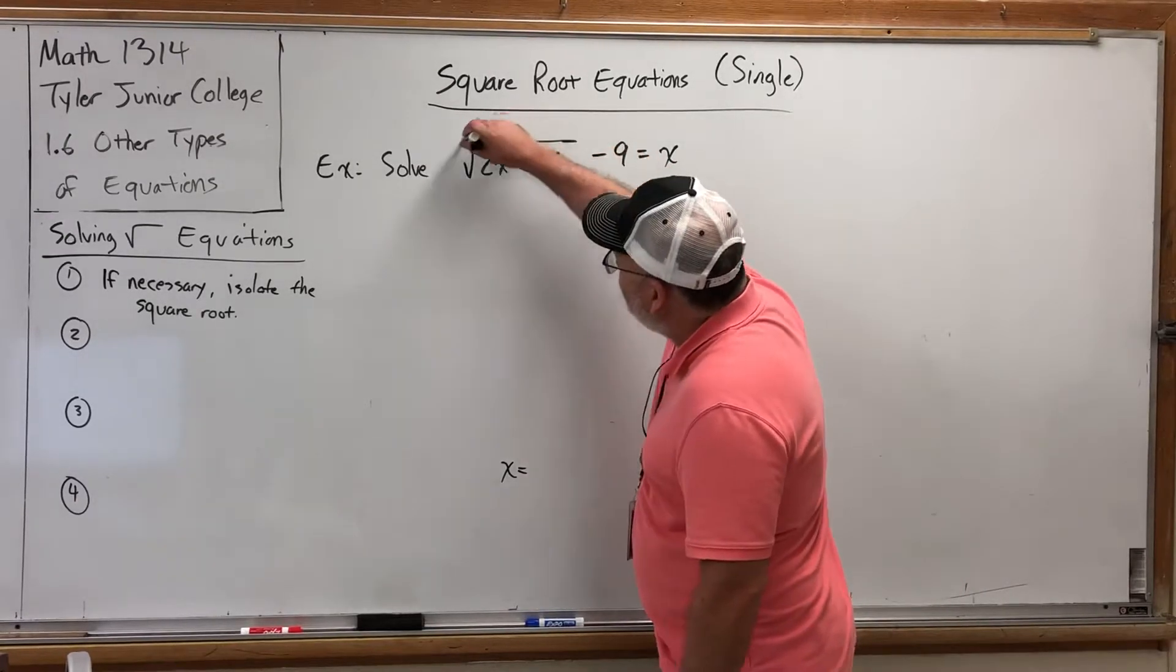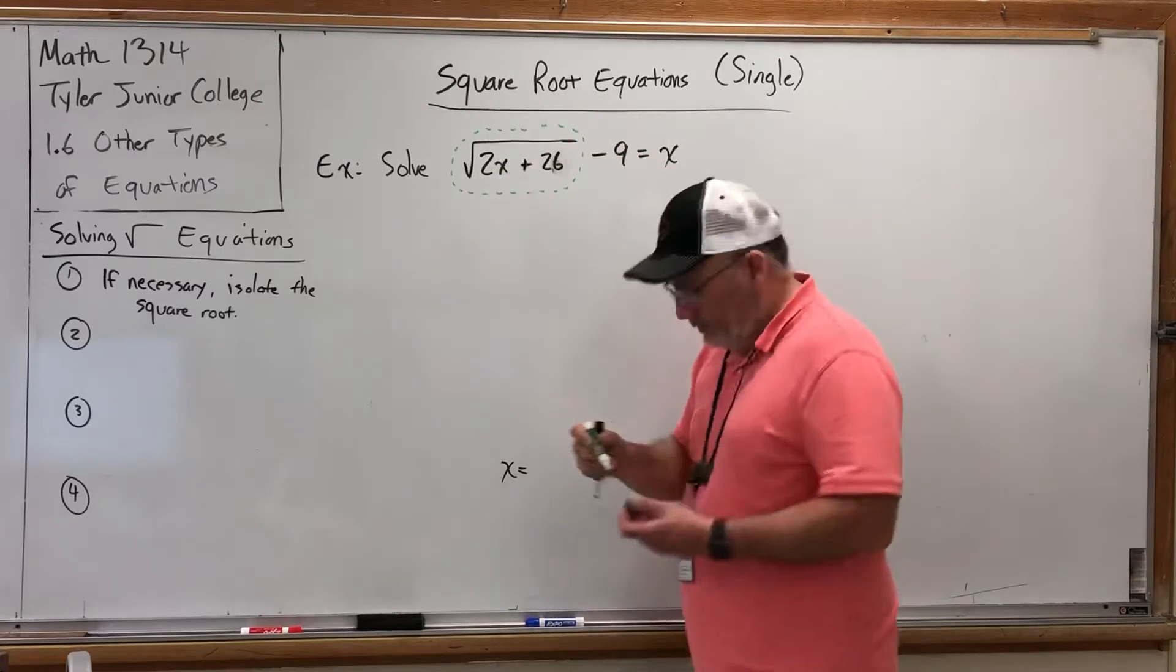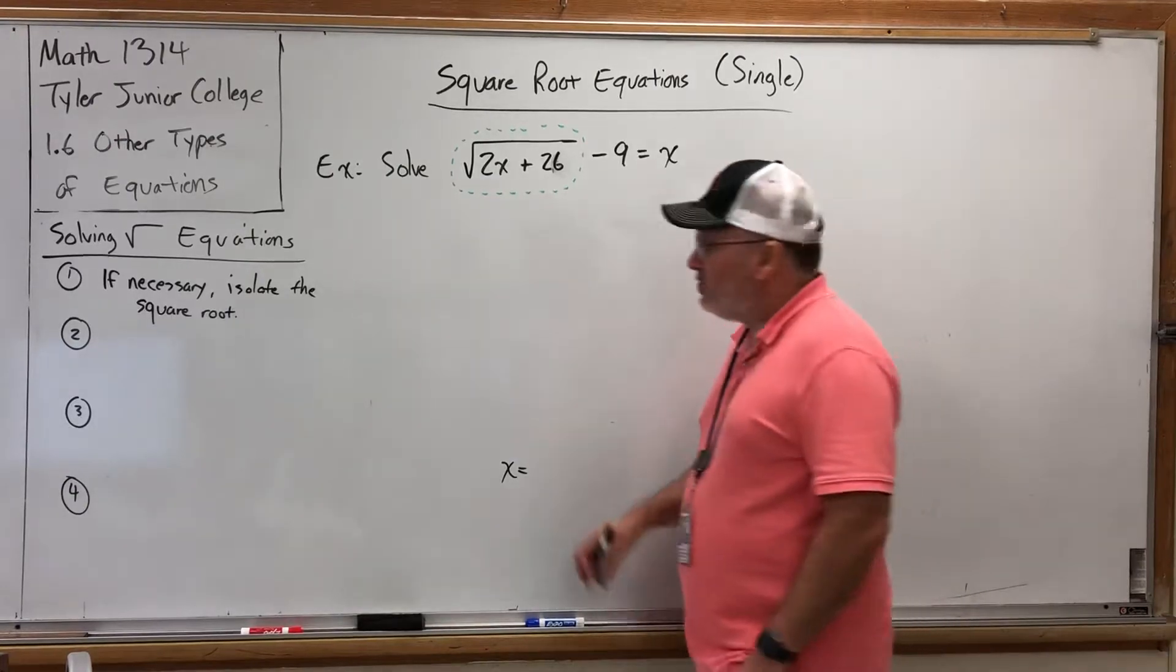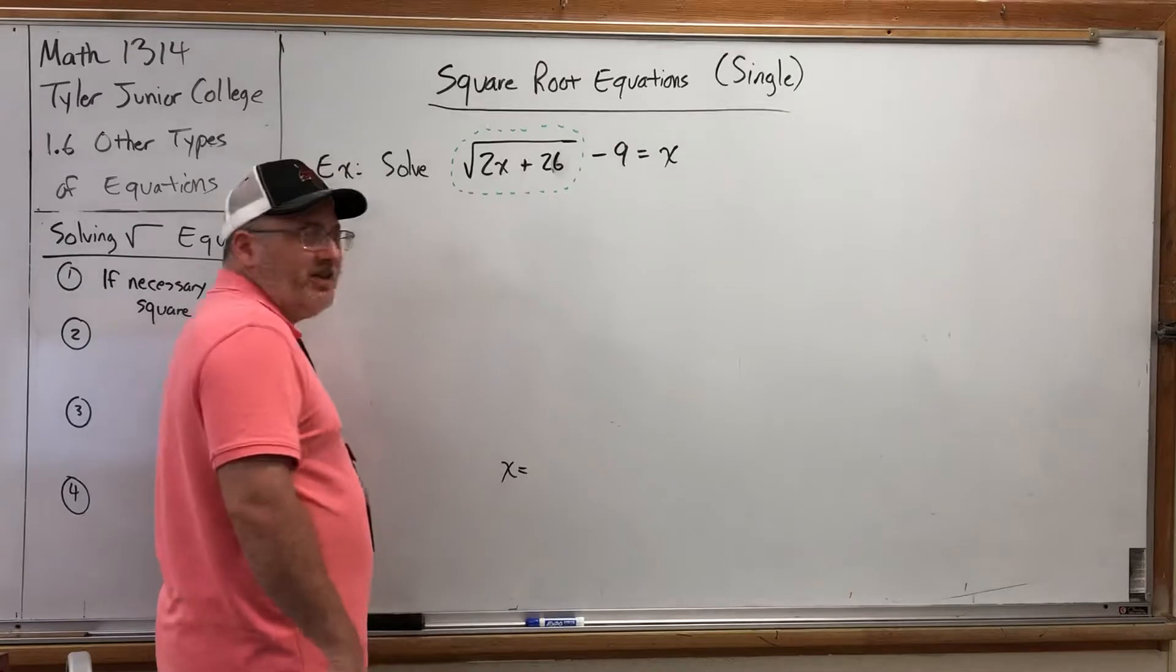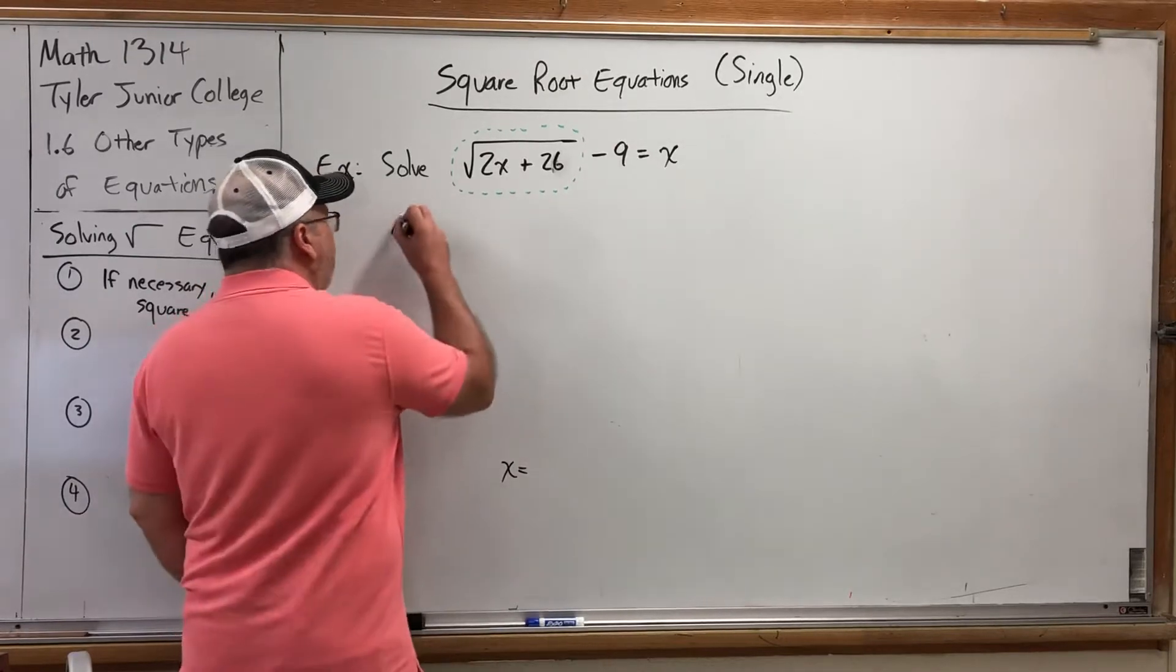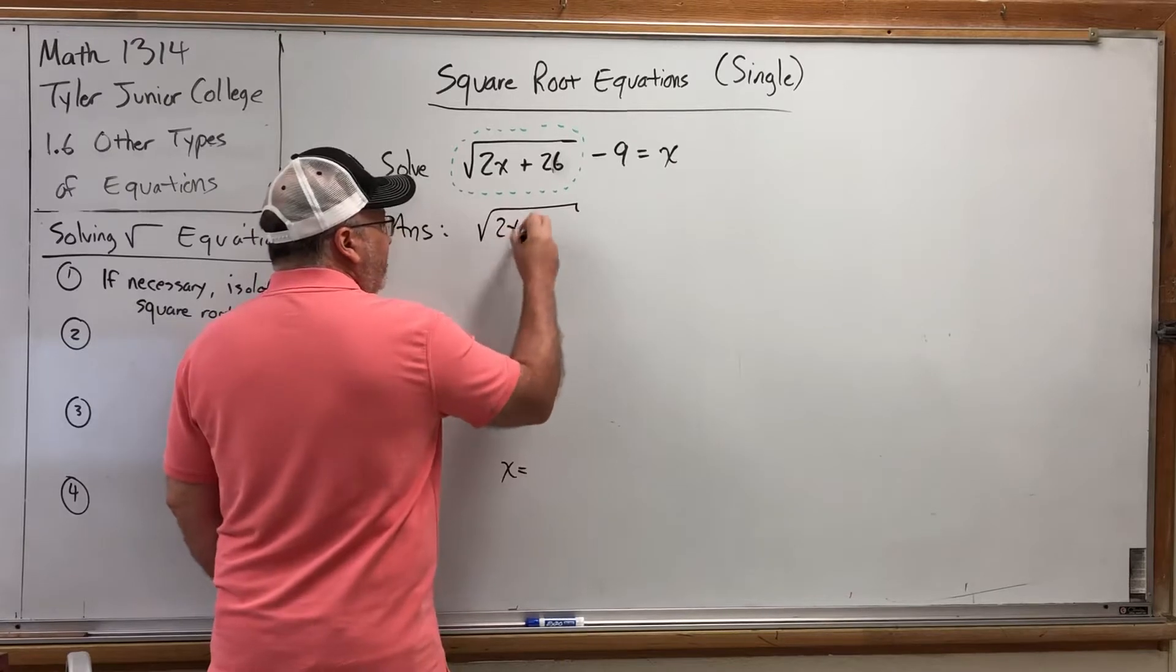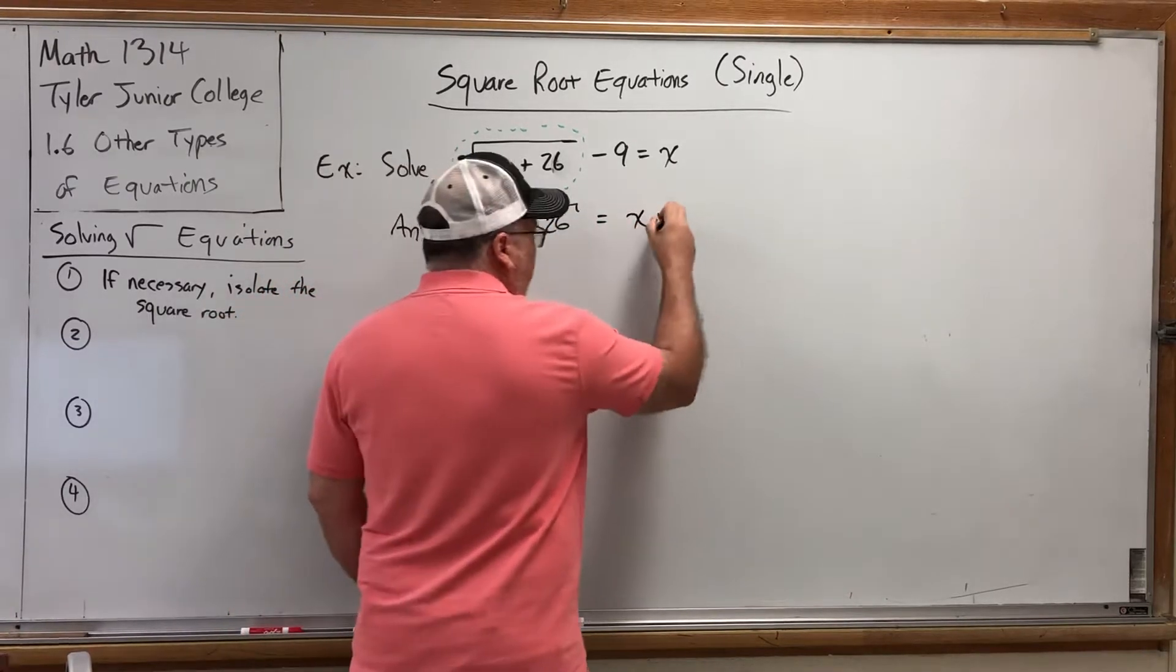In this case, if I drop a dotted circle around the square root, it's not isolated because there's a minus 9 attached to it. So we need to fix that first. We can move the 9 to the other side. That's equivalent to adding 9 to both sides. And if we move the 9 to the other side, we get the square root of 2x plus 26 is equal to x plus 9.